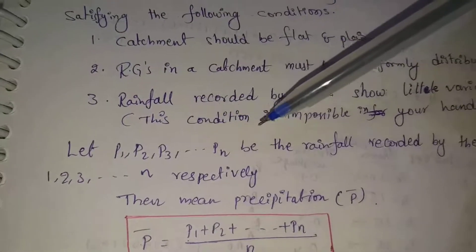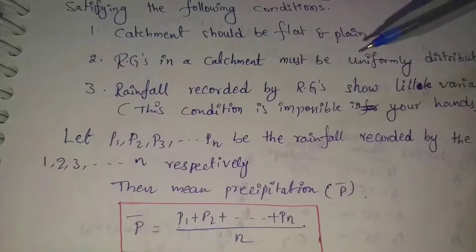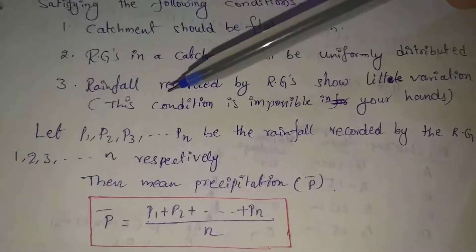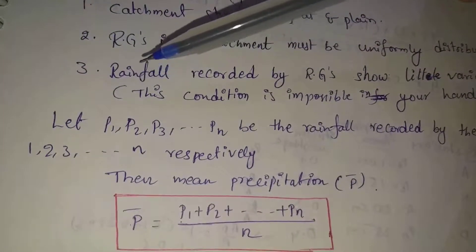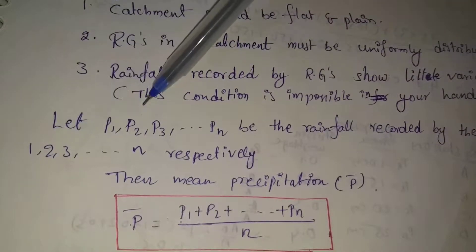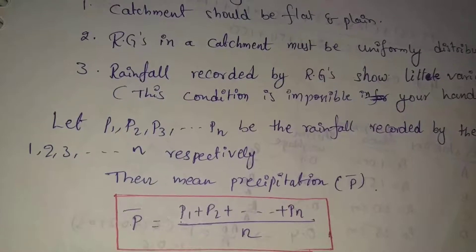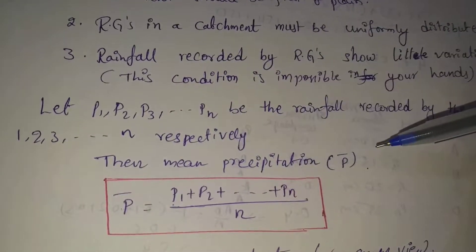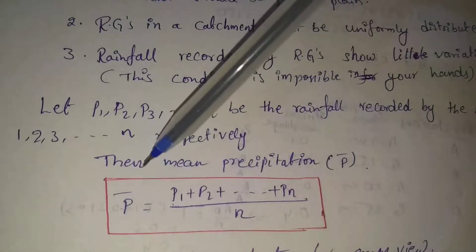Let P1, P2, P3, and so on, Pn be the rainfall recorded by rain gauge stations 1, 2, 3, and so on respectively. Then mean precipitation P bar equals P1 plus P2 plus P3 and so on Pn, divided by n. This is a very simple method to find the mean precipitation value.